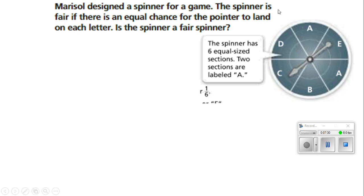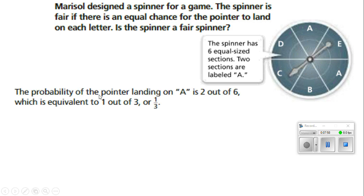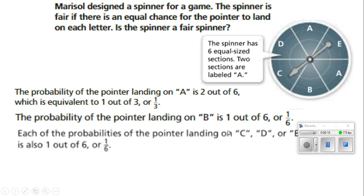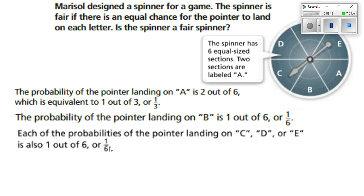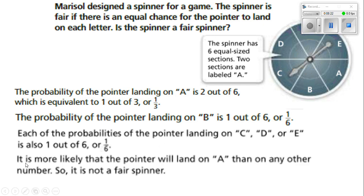Marisol designed a spinner for a game. The spinner is fair if there is an equal chance for the pointer to land on each letter. The spinner has sections labeled A, E, A, B, C, and D. There are two sections labeled A, but only one section each for B, C, D, and E. The spinner has six equal-size sections, so the probability of landing on A is two out of six, equivalent to one out of three. The probability of landing on B, C, D, or E is one out of six. It is more likely the pointer will land on A than any other letter, so it is not a fair spinner.